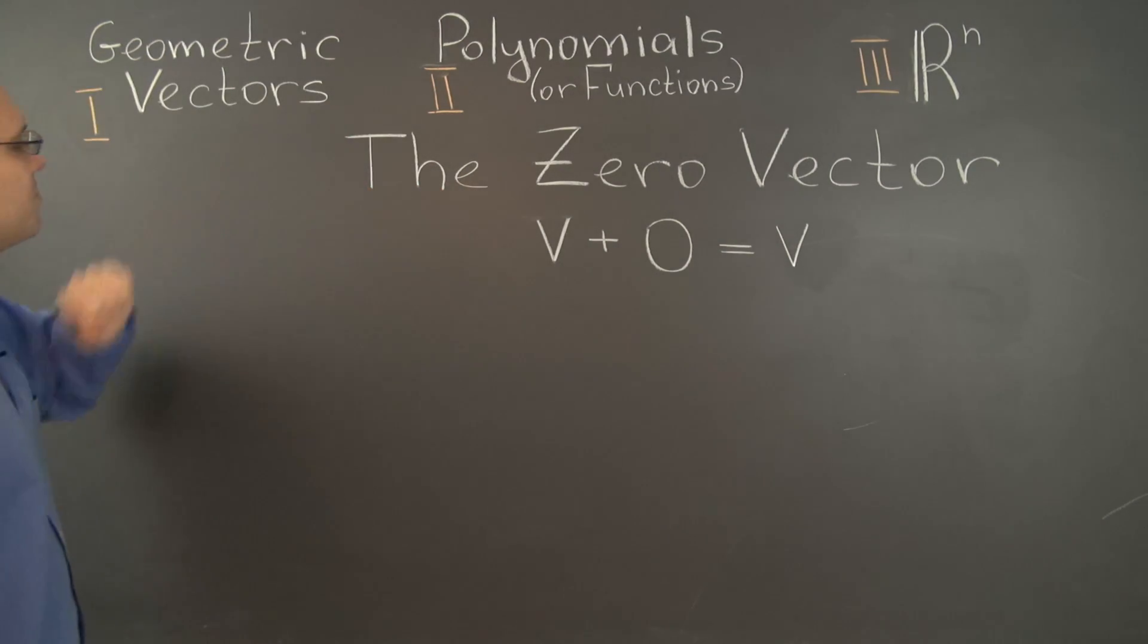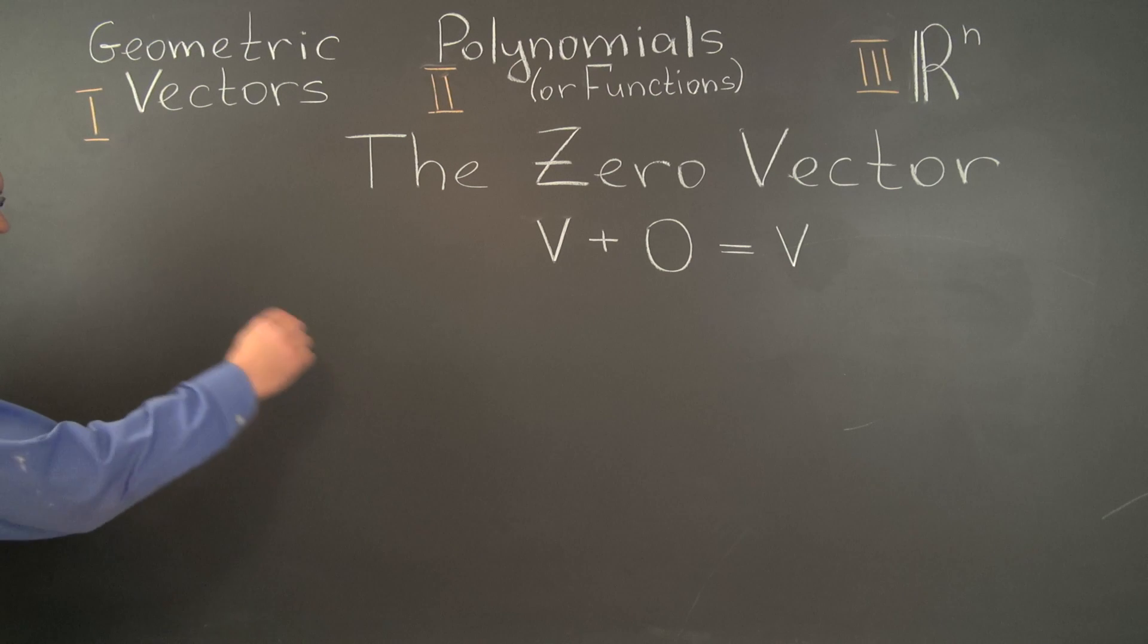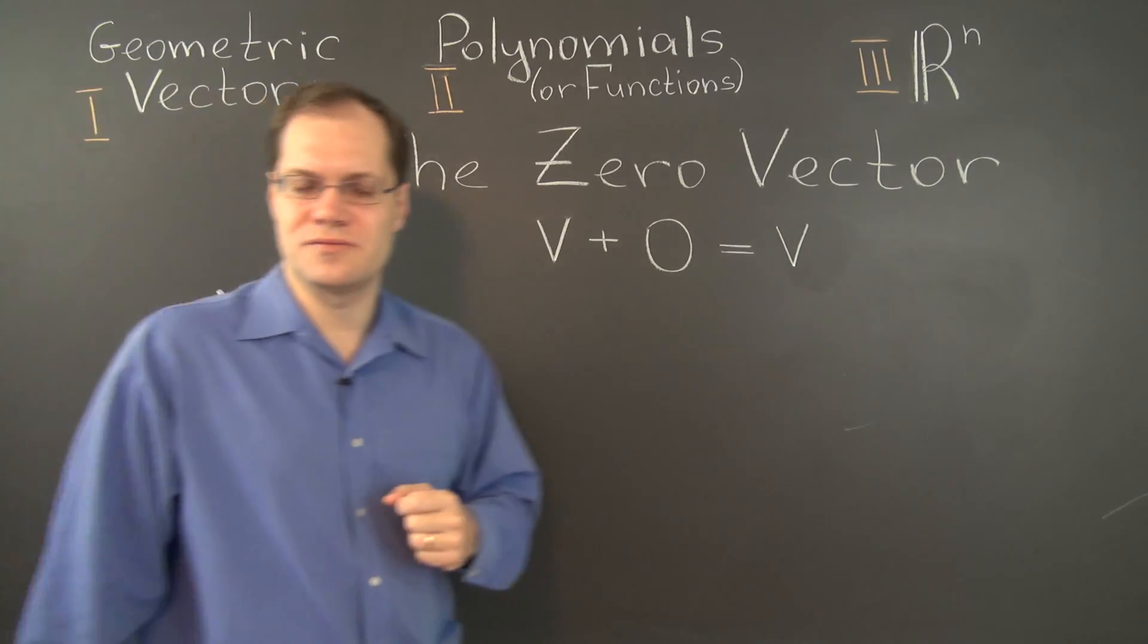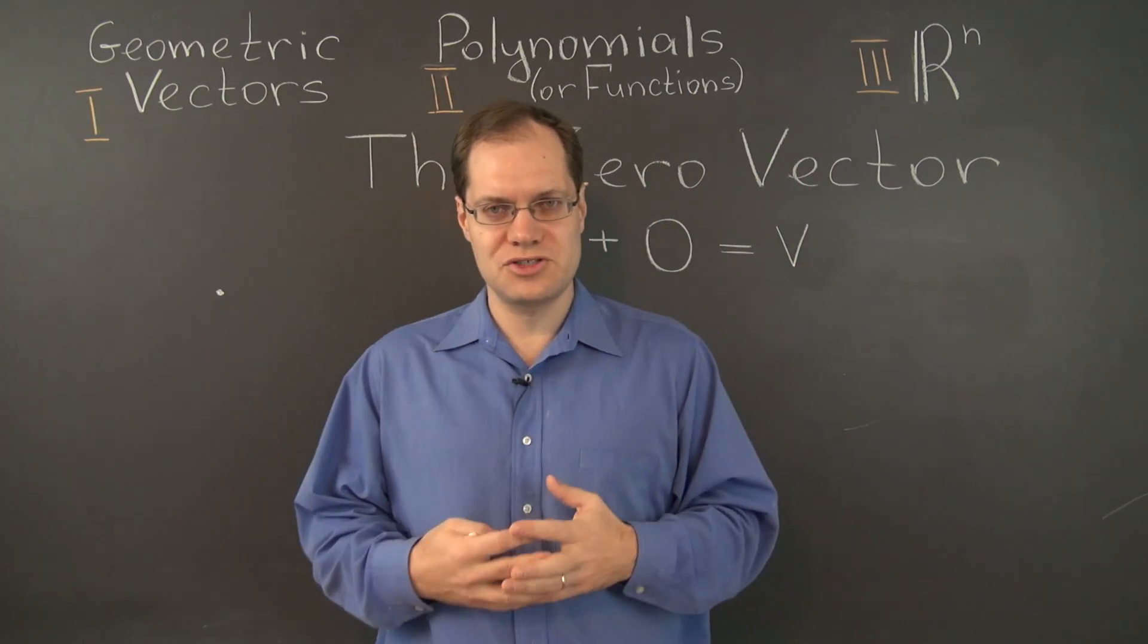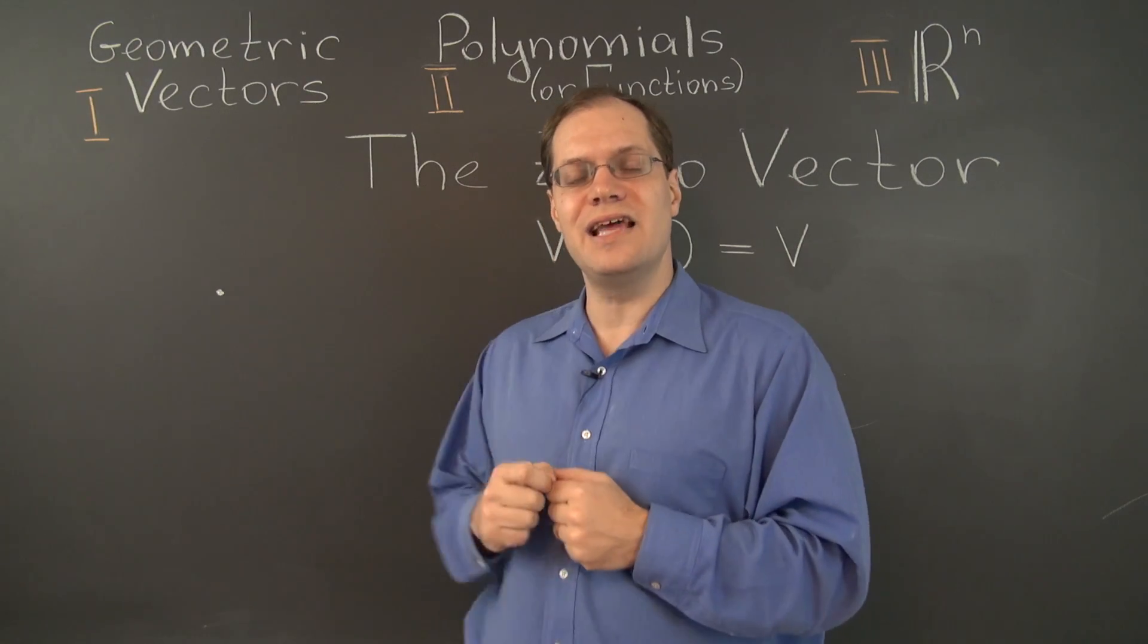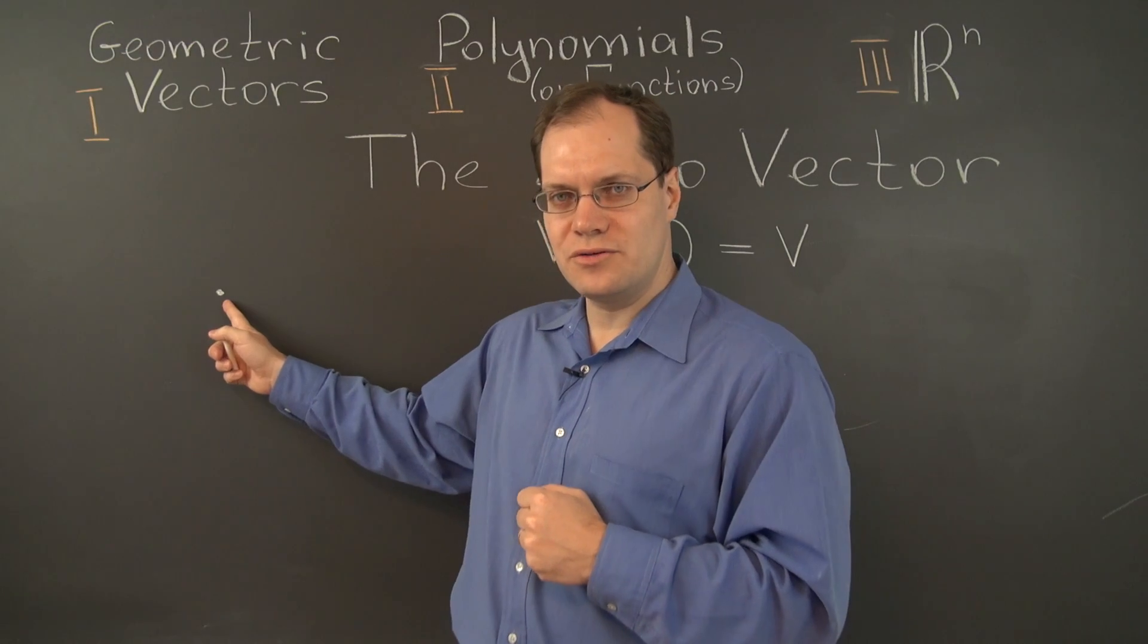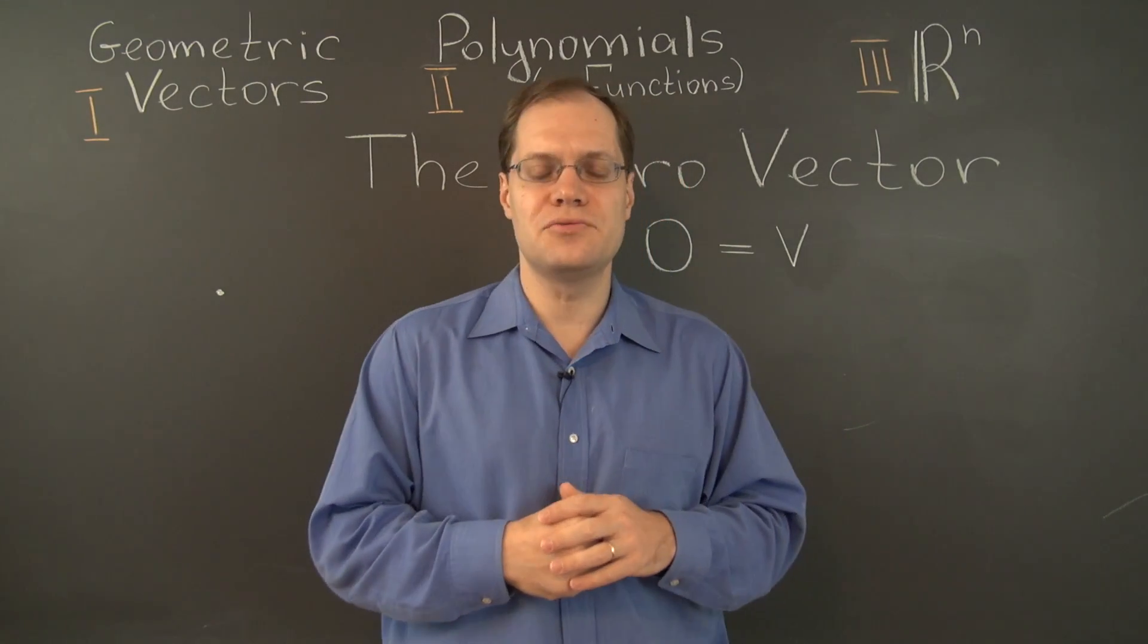We'll start with geometric vectors, of course. The zero vector is a vector that starts at the origin and ends at the origin. It's slightly atypical because we're used to geometric vectors having a direction and a length. This vector certainly has a length, its length is zero, but it doesn't really have a direction.